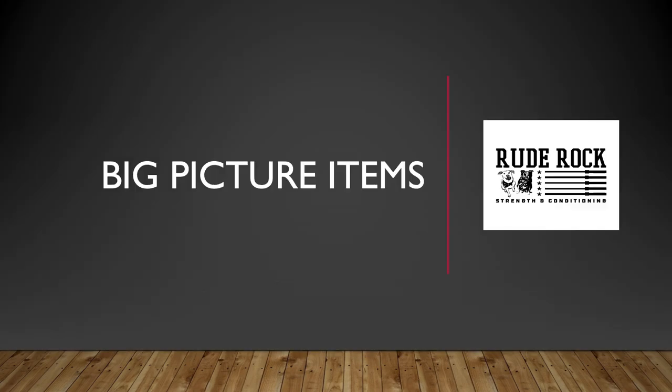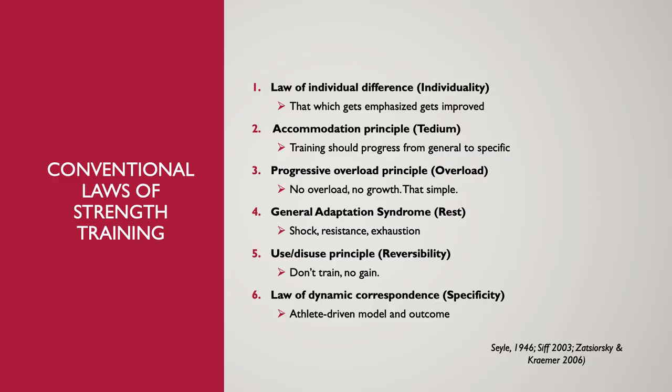Starting with the big picture items — the conventional laws of strength training. Number one: the law of individual difference, which is really about specificity and individuality. The way I've always interpreted this is that which gets emphasized gets improved. Looking at the assessment, evaluation, and interview — letting the athlete tell you and show you what they need — is really step number one.